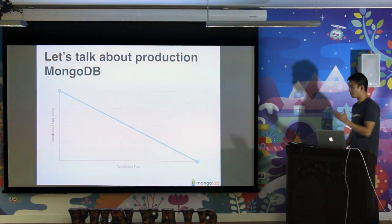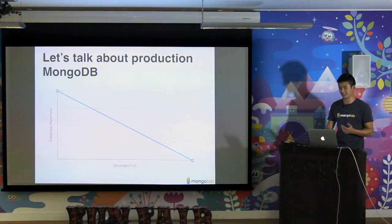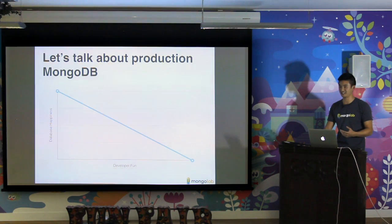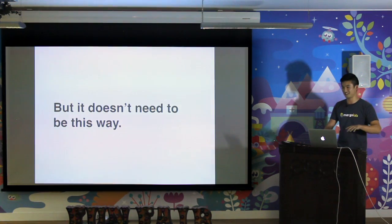What we've seen is there's a strong negative correlation between database happiness and developer fun. Developers like to hit APIs, push it to the limit, and see what happens. The database doesn't like that. The database likes planning, good data modeling, good indexes, not going crazy. But it doesn't need to be this way as long as you think about the database somewhat after you're done doing basic functionality.